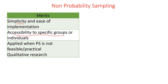Another benefit is accessibility to specific groups or individuals. Non-probability sampling can be applied when probability sampling is not feasible or practical. For example, in qualitative research we cannot apply probability sampling, so we have to apply non-probability sampling. We can also use non-probability sampling when the type of research is exploratory research.